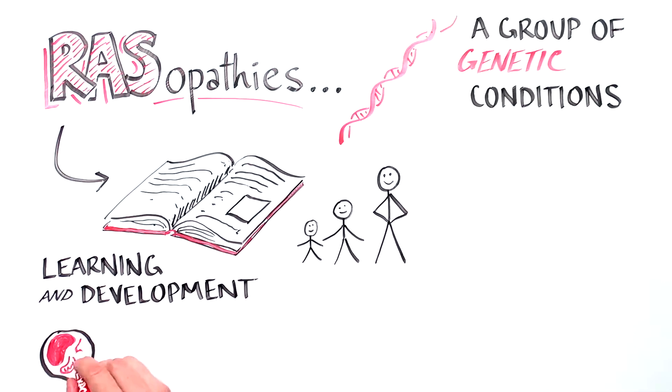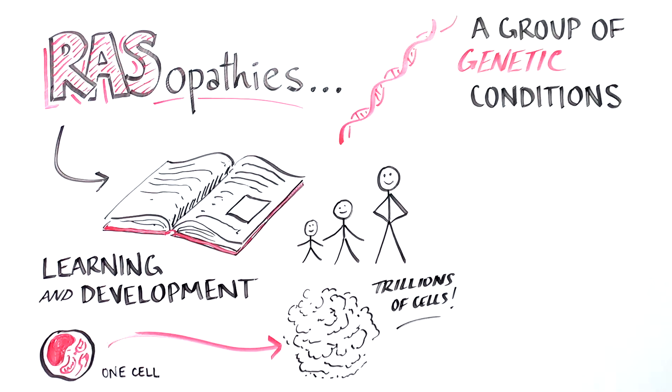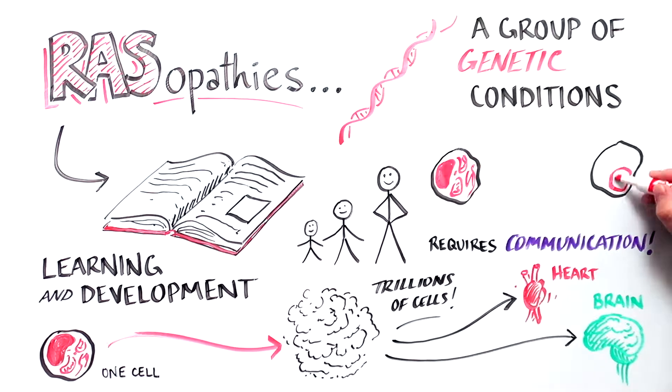We all come from a single cell. That cell copies itself millions of times to create trillions of cells that will turn into a human being. How trillions of cells make a liver, lungs, heart, brain, etc. requires communication between the cells.